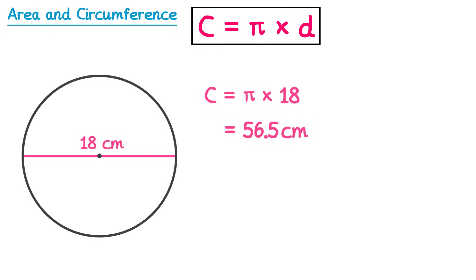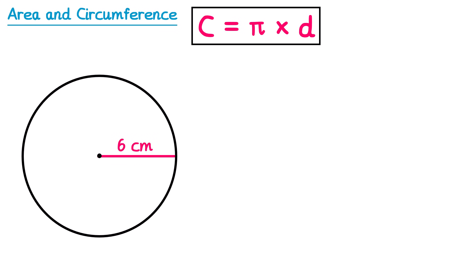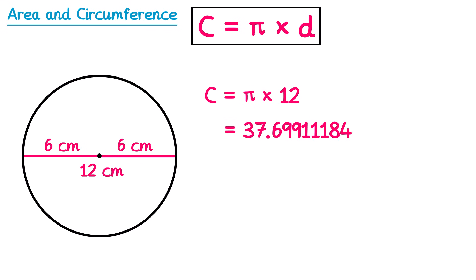Now let's find the circumference of a second circle. This time we've only been given the radius at 6cm. So circumference equals pi, but we need to multiply by the diameter. We have a second radius which is also 6cm, so the diameter will be double 6, which is 12. So we do pi multiplied by 12. If we round to one decimal place, it will be 37.7 centimetres.